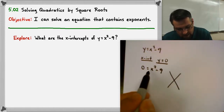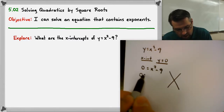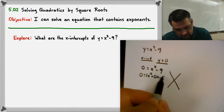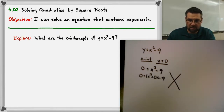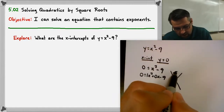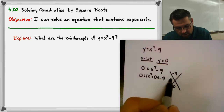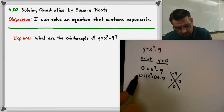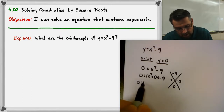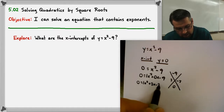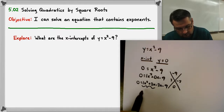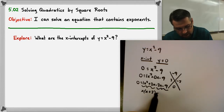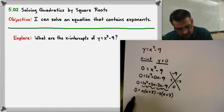The a value is one, so we rewrite this as one x squared plus zero x minus nine. One times negative nine goes on top, zero goes on bottom. The only two numbers that add up to zero and multiply to negative nine are positive and negative three. We expand it: one x squared plus three x minus three x minus nine. Grouping: GCF is x with leftover x plus three, and we take out a negative three with leftover x plus three. So our factors are x minus three times x plus three.